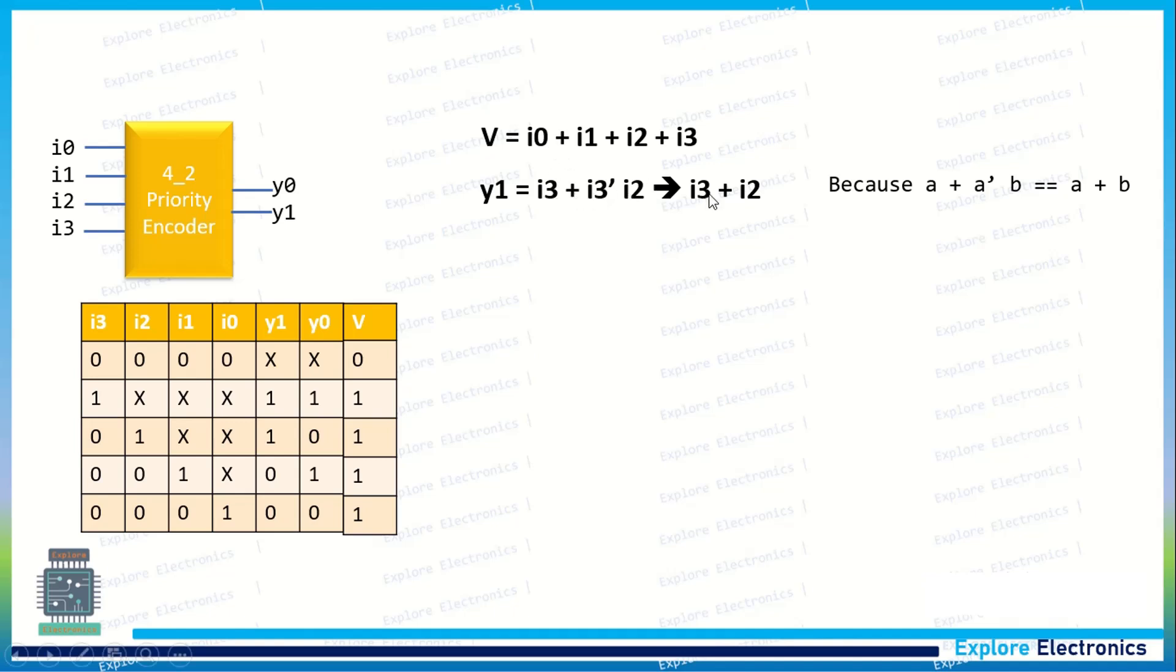This is the simplest expression for y1. Similarly for y0, if you see here we have 1 and here we have 1. At these cases, what are all the inputs? i3 + i3̄·i2̄·i1.